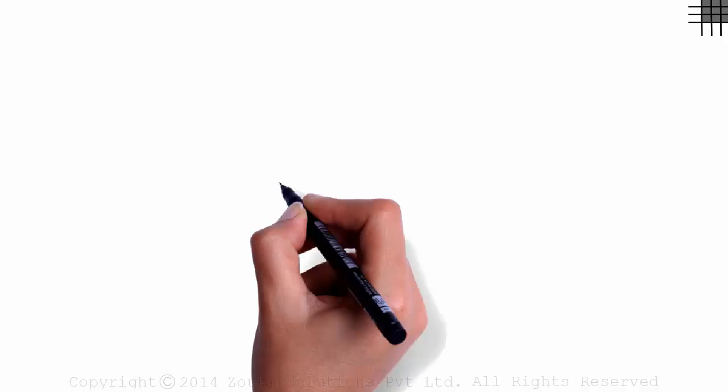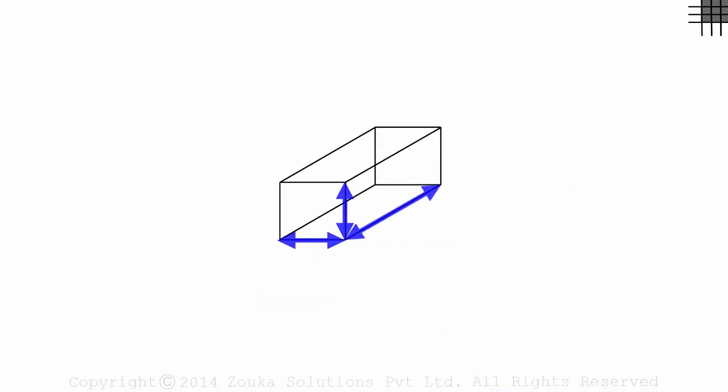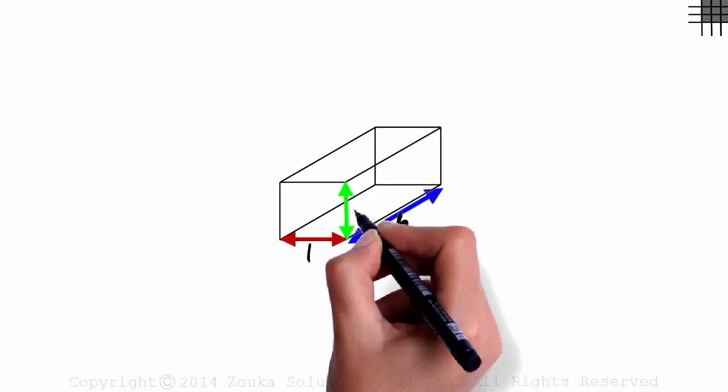A cuboid is simply a box like this. It is three-dimensional as it does not occupy a part of just one plane. Three things define a cuboid: length, its breadth, and its height.